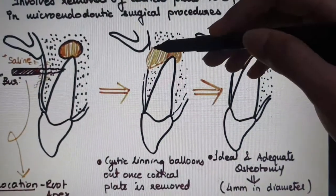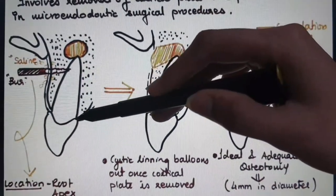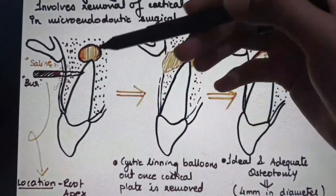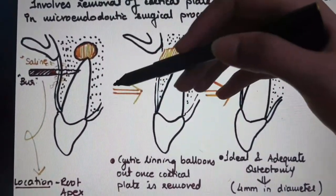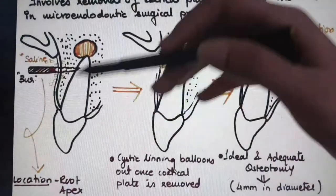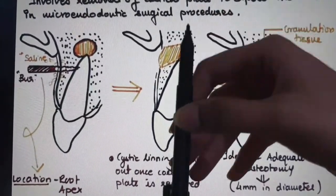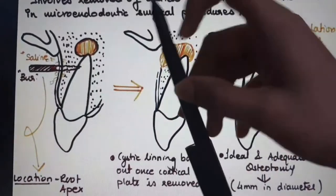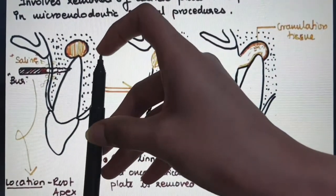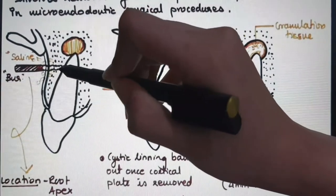You can see the cystic lining will balloon out. If the cortical plate is intact, as in retreated cases where RCT is already done, the steps are different. There is no breach in the cortical plate, so using an explorer is not advisable. First take a radiograph, measure the working length, and transfer that working length to a GP stick. Place the GP stick adjacent to your tooth and measure the level of entry.